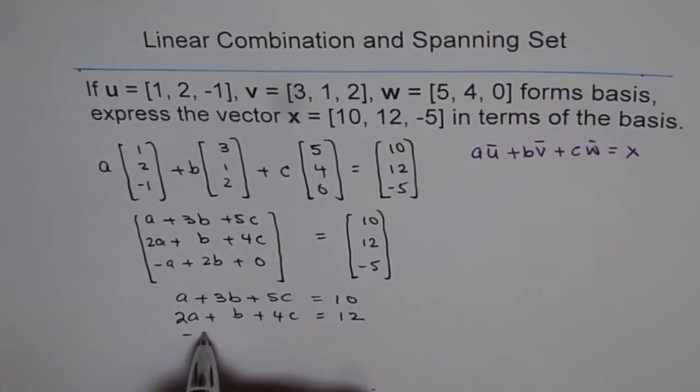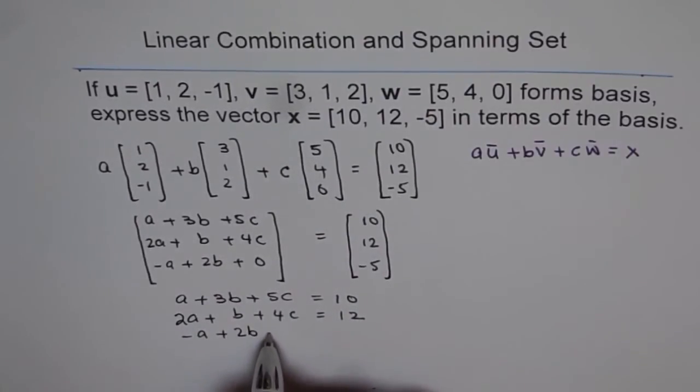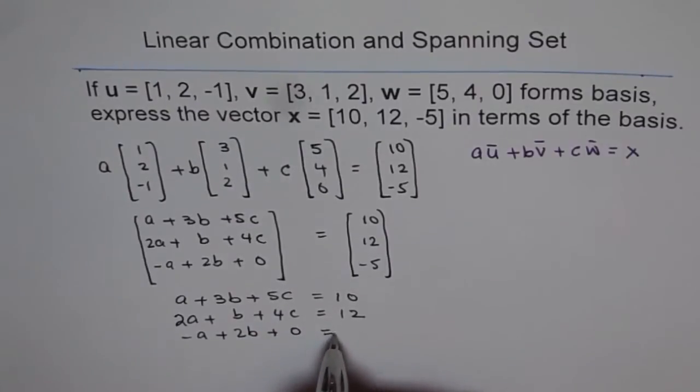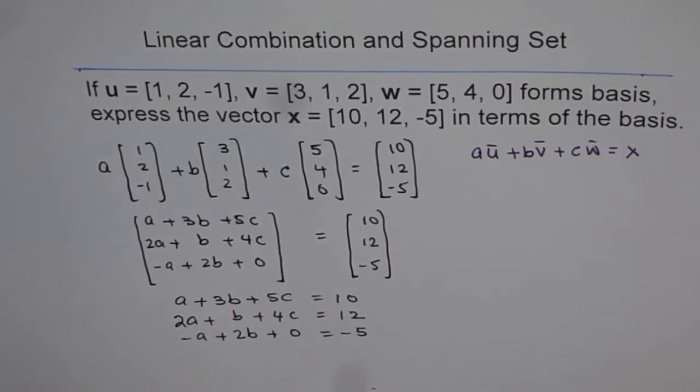And the third one is minus a, plus 2 times b, plus 0, equals to minus 5. Now we have three equations, and three unknowns, so it is very simple to find the answer.